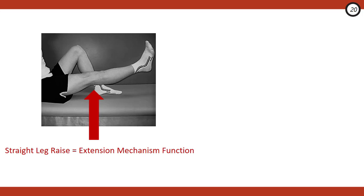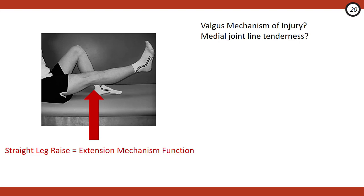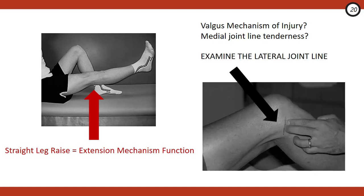Another quick exam tip is to have the patient perform a straight leg raise in order to assess their extensor mechanism function. If a patient is able to straight leg raise, then the possibility of a quadriceps or patella tendon rupture is significantly reduced. And then lastly, in any patient who reports a valgus mechanism of injury or medial joint line tenderness, you want to make sure that you examine that lateral joint line because if it's tender there, you want to significantly increase your suspicions for a lateral tibial plateau fracture. Therefore, if your x-rays are negative, you may want to consider getting some oblique views on x-ray or potentially even getting a CT scan.